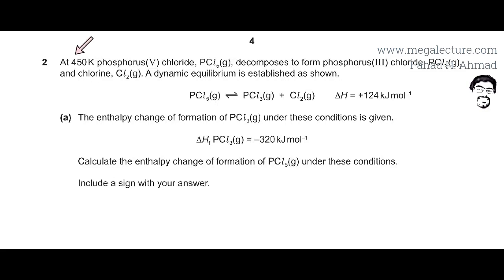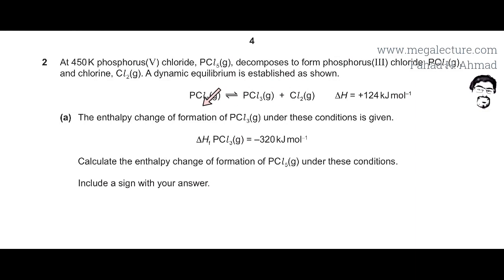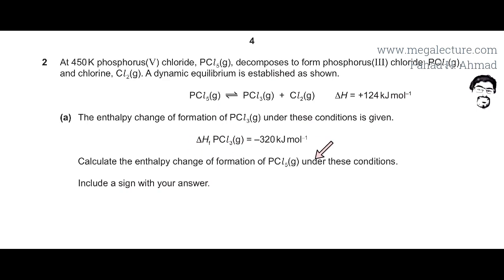The question states that at 450 Kelvin, PCl5 decomposes to form PCl3 and chlorine, and a dynamic equilibrium is established. So you have this reaction happening where PCl5 is changing into PCl3 and Cl2, and vice versa — it's going in the forward and backward direction at the same rate. The enthalpy change for formation of PCl3 under these conditions is given. Calculate the enthalpy change of formation of PCl5 under these conditions, and include a sign with your answer.